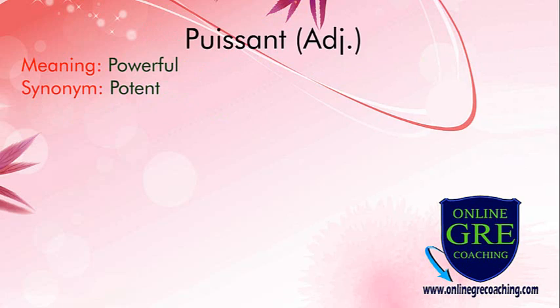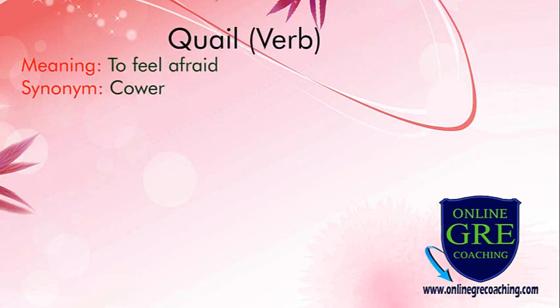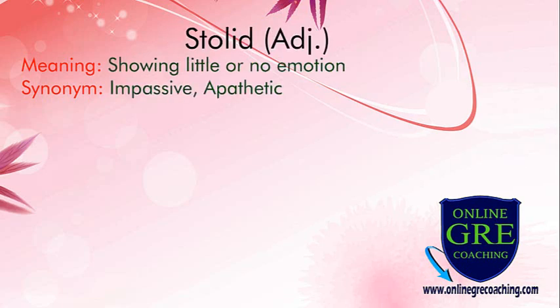Next word is poesant, means powerful. Synonym is potent. Next word is quell, means to feel afraid. Synonym is scour. Next word is stolid, means showing little or no emotion. Synonyms are impassive and apathetic.